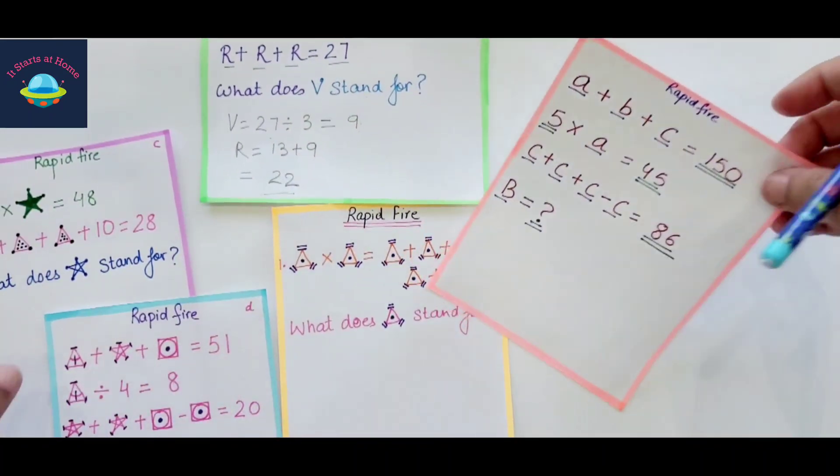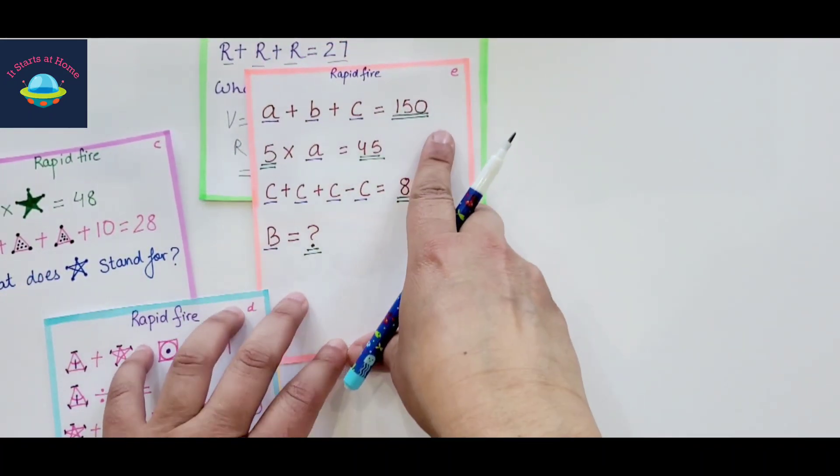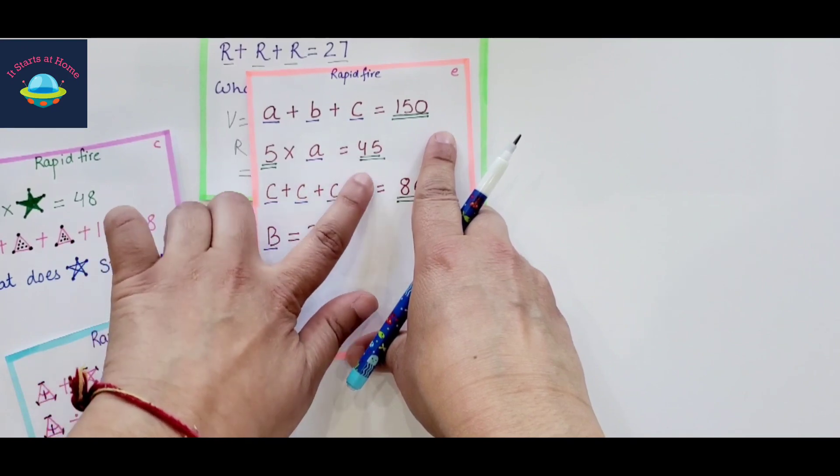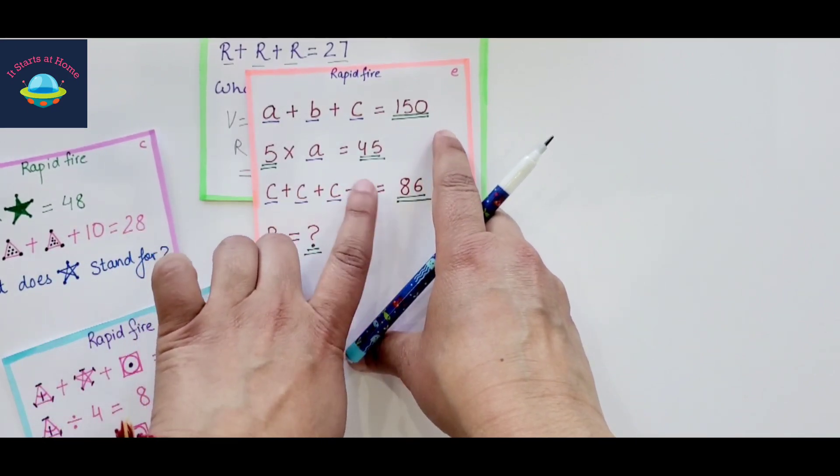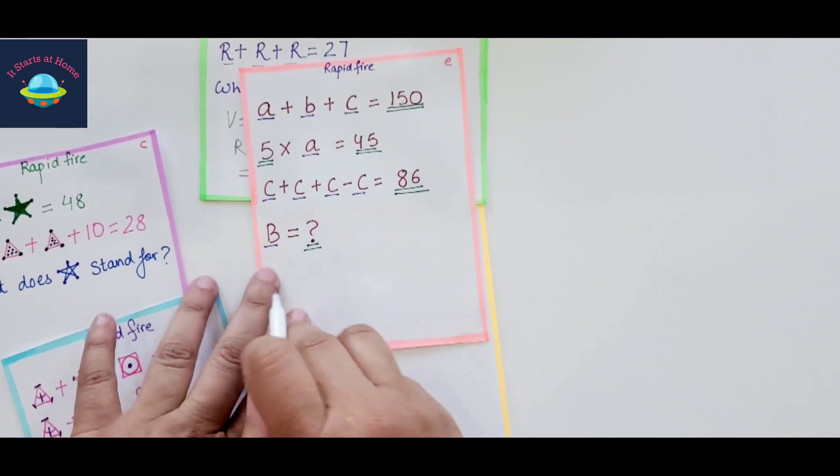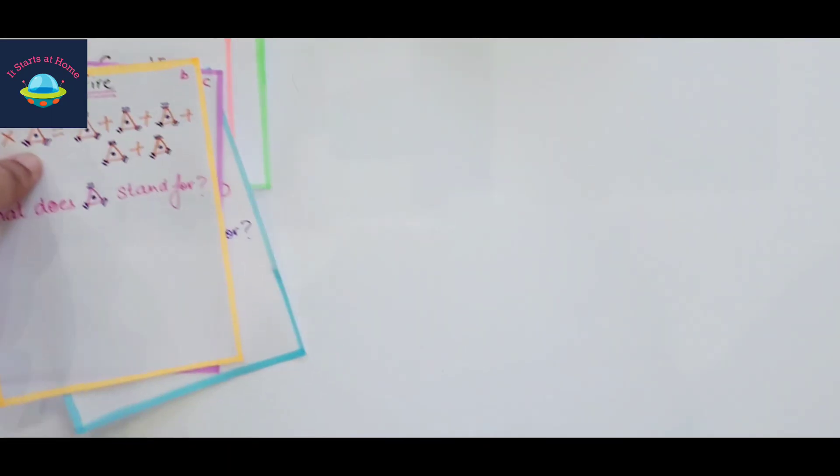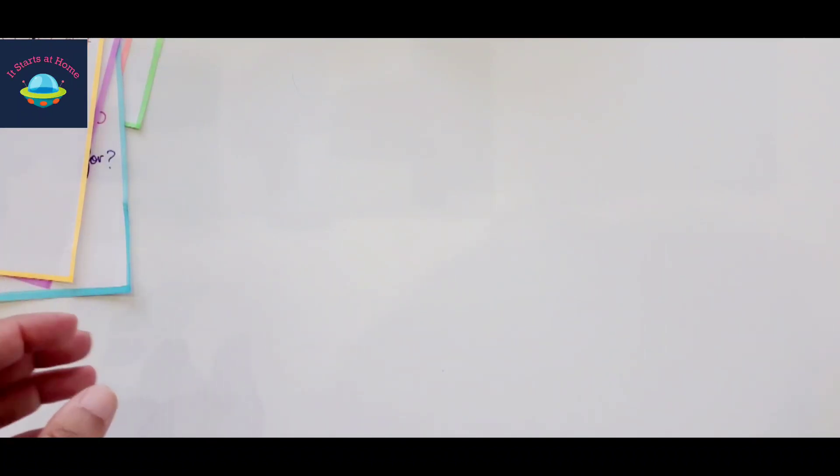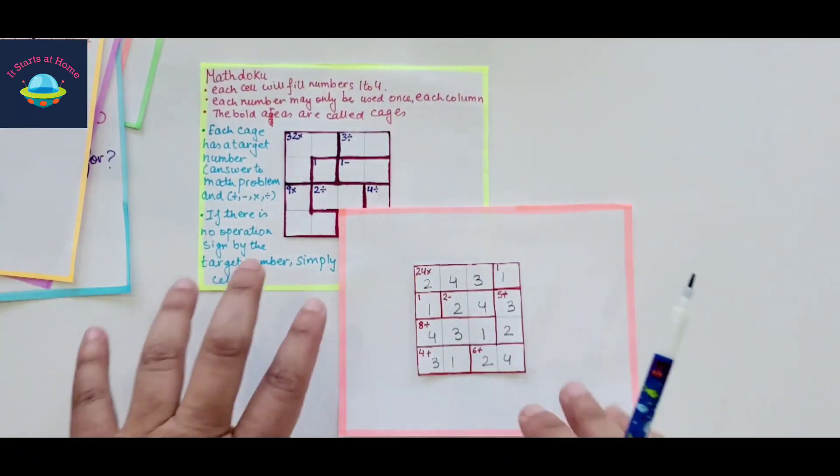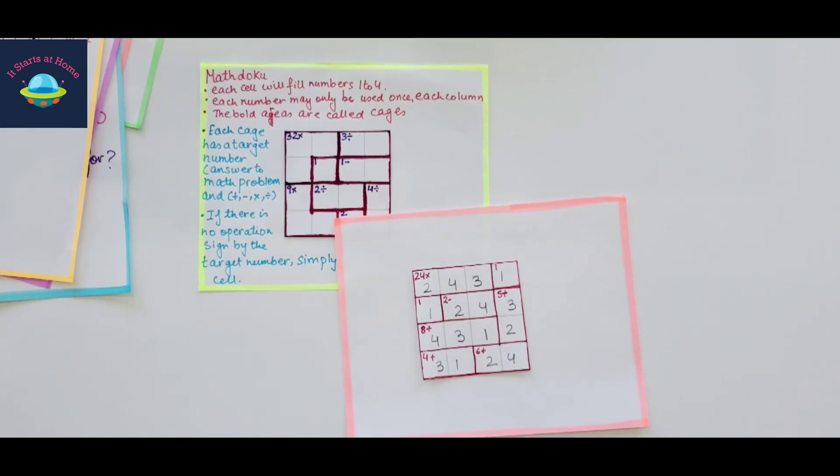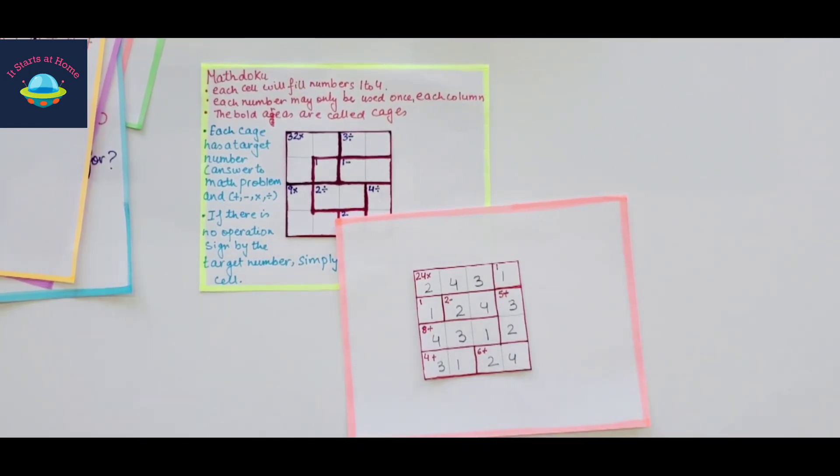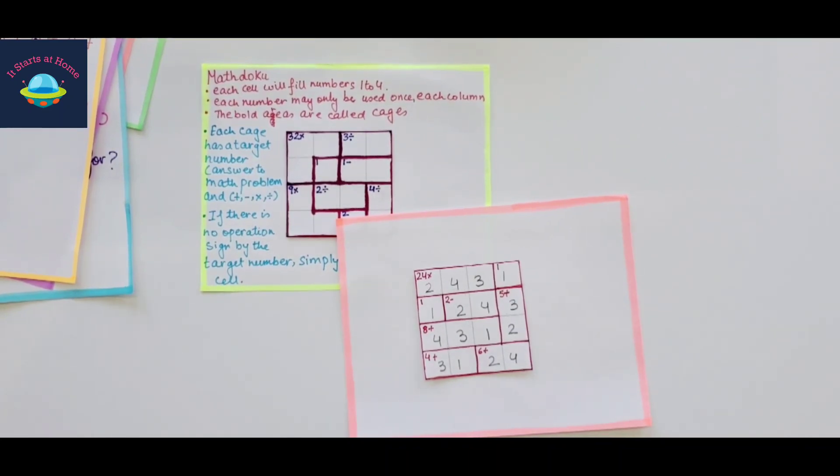Like this, I have A plus B plus C is equal to 150, 5 into A is equal to 45, C plus C plus C plus minus C is equal to 86. You have to find the value of B. And then you have this one. I'm not sure how many of you are aware of Math Dooku. This is something that I had introduced with Vivant last year. I had attended a seminar and that's where I was introduced to this concept. It's a little difficult and tricky concept. It's a step ahead of Sudoku.